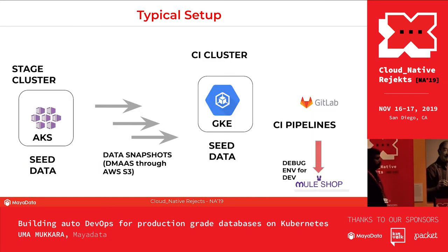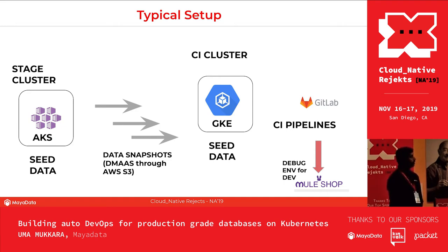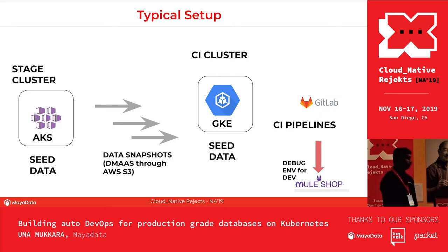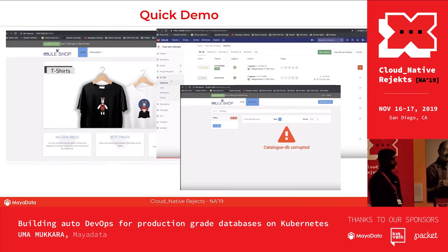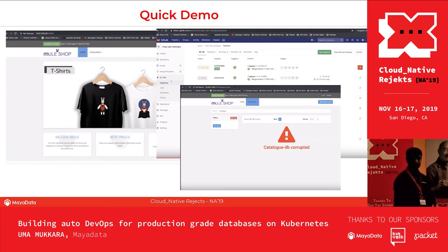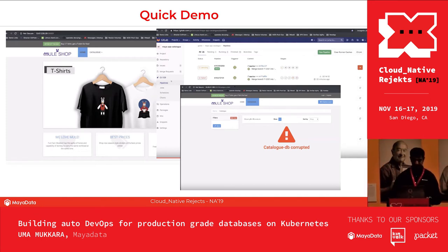I want to take you through a demo. A typical pipeline run takes 15 to 20 minutes at least, which we don't have time for, so I have a recorded demo. In it, the stage cluster is on Azure, the CI cluster is on GKE, and my entire CI is running on GitLab. We have an application called Mule Shop — a stateful application running on Kubernetes on Azure. I'll show a quick merge resulting in a pipeline failure, and then cloning the failed data state to give back to developers.